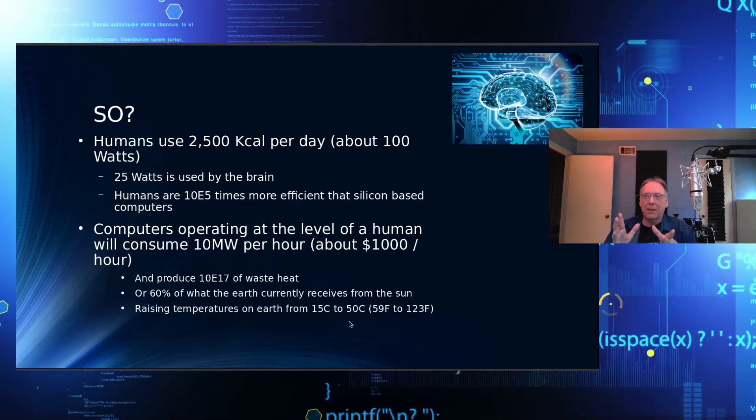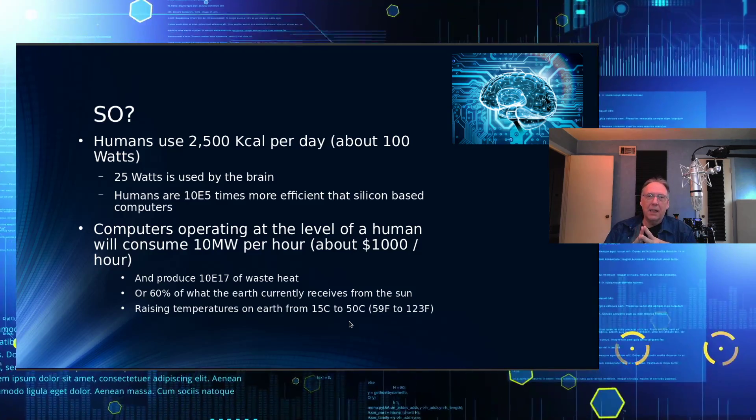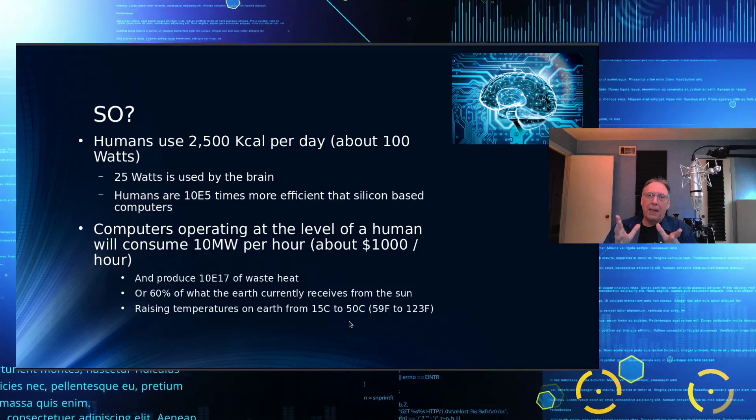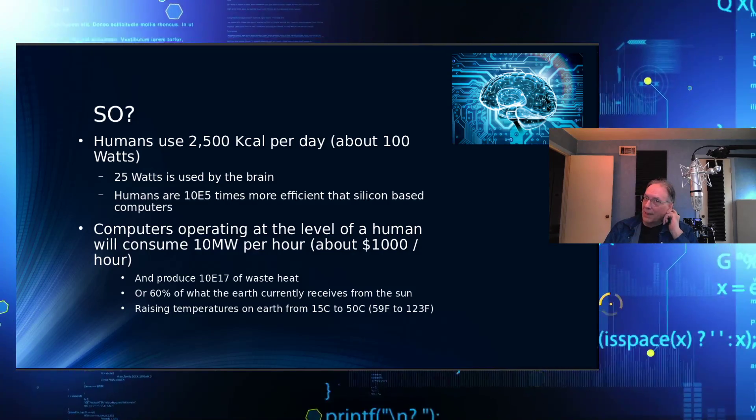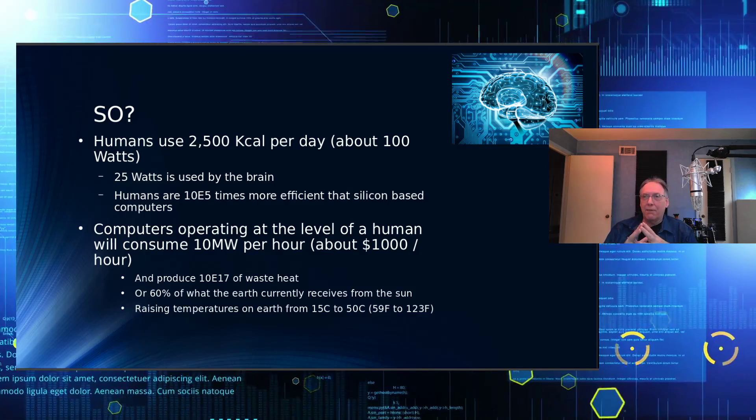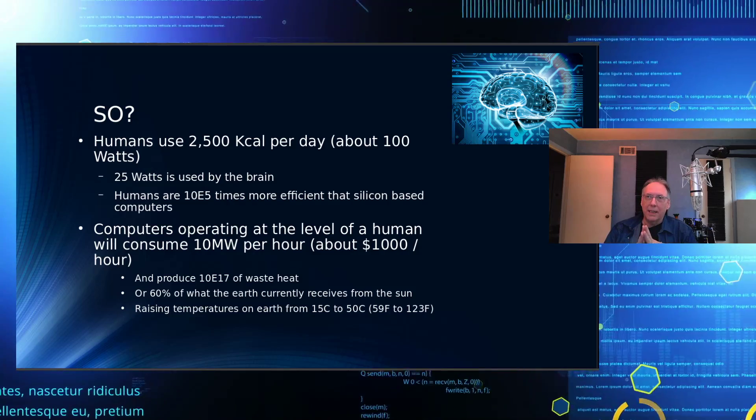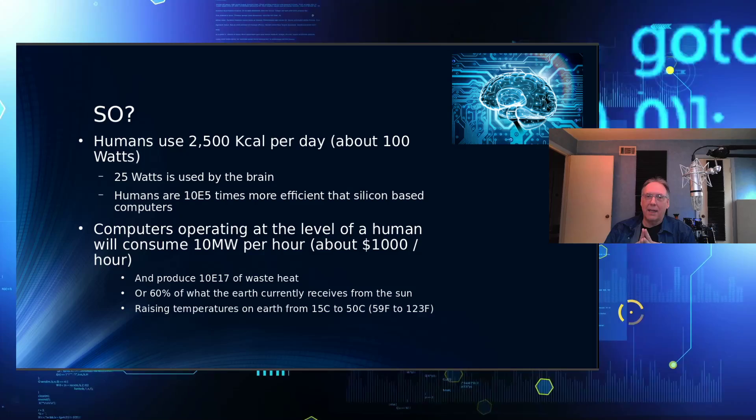Humans use, just in contrast, humans use about 2,500 kilocalories a day. That's about 100 watts or so, and 25 watts of that is for the brain. So we're about 10 to the fifth times more efficient than silicon in being able to process and perform AI tasks.